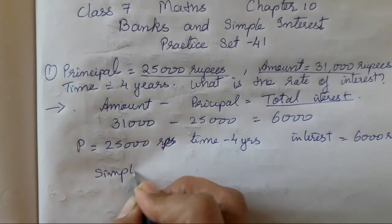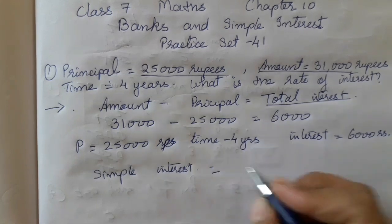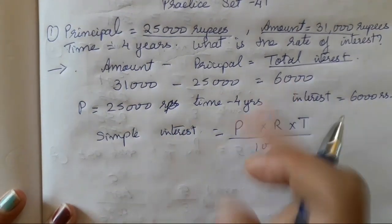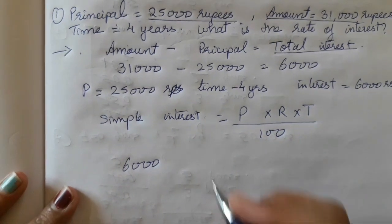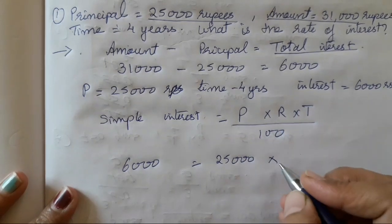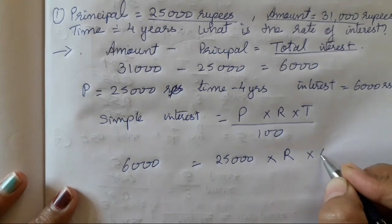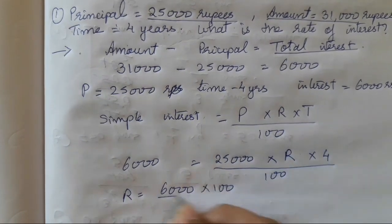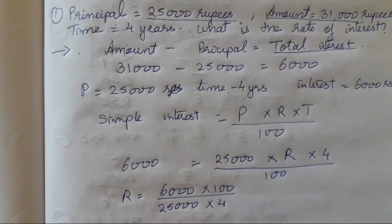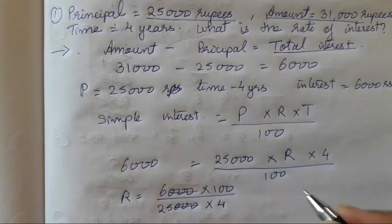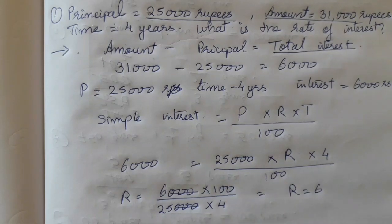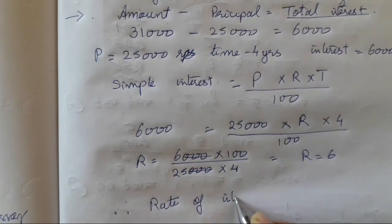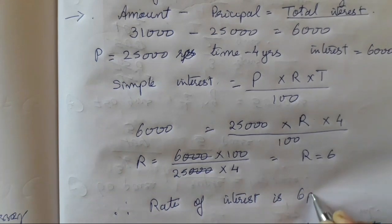Now we have to find the rate of interest. Simple interest is P into R into T upon 100. So what is the simple interest? We have that is 6,000 rupees. P is 25,000 rupees, R we have to find, and T is 4. So R is equal to 6,000 multiplied by 100 upon 25,000 into 4. When you solve this, you are going to get R is equal to 6. Therefore, the rate of interest is 6% PCPA.